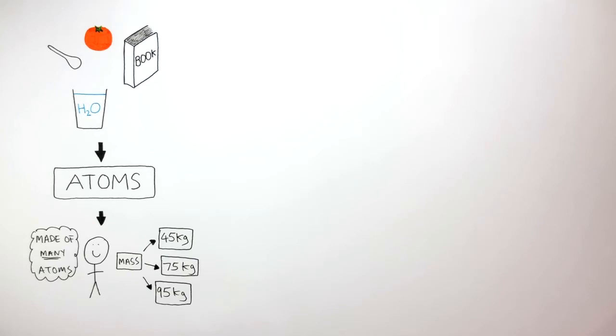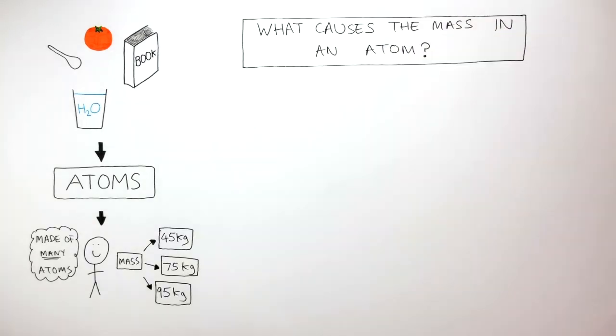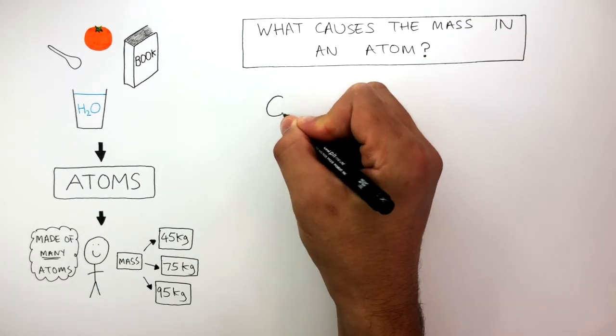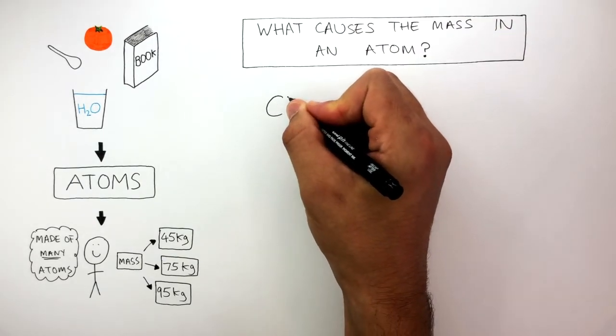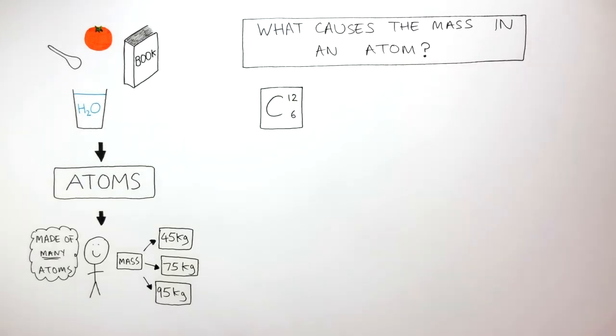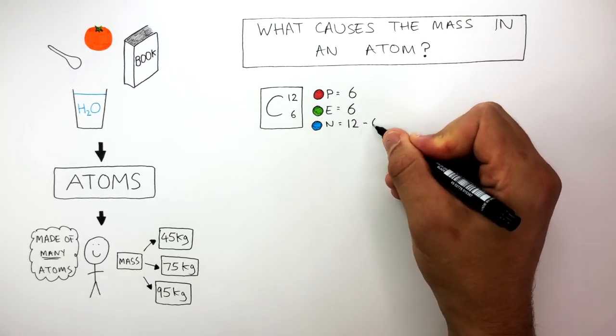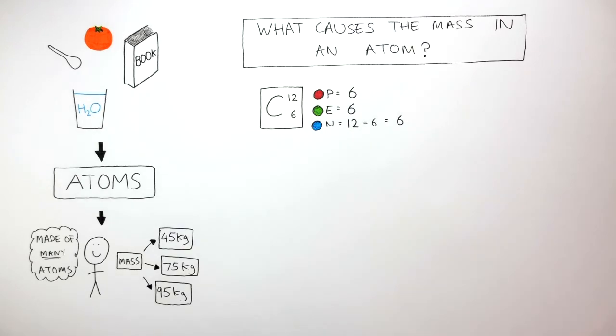Now, the question is, what causes the mass in an atom? Let's use carbon to answer this question, which has a relative atomic mass of 12 and an atomic number of 6. This information tells us carbon has 6 protons, 6 electrons, and then 12 take away 6 means there are 6 neutrons.